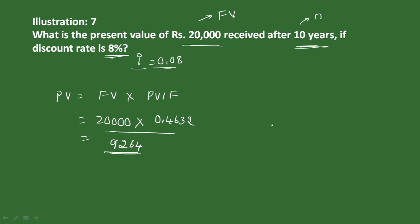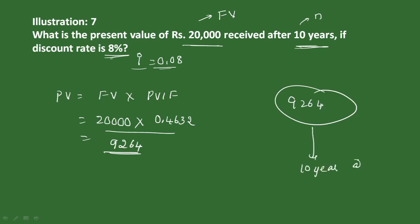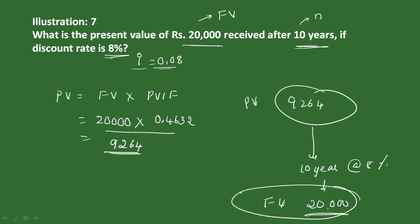Multiplying 20,000 by 0.4632 gives ₹9,264. So ₹9,264 is the present value, while ₹20,000 is the future value. In the next video we will look at multiple cash flow present value. Post any doubts in the comment box.